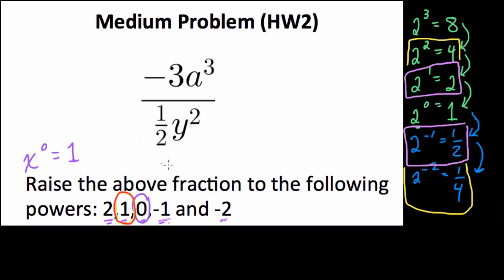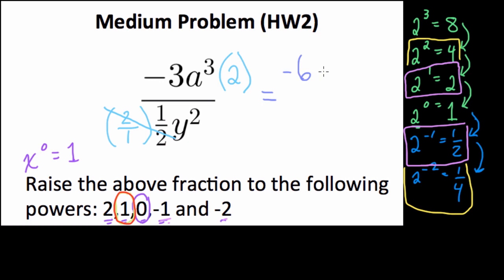You probably don't want to leave a fraction in your denominator. A nice way to get rid of that fraction is to multiply by the reciprocal — multiplying a number by its reciprocal cancels it out, since one-half times two is one, and one won't affect your answer. But if you're going to multiply your denominator by two, you should also multiply your numerator by two. Distributing our two up here, we get negative six a to the third over y squared. So, if we raise it to the zero power it equals one; if we raise it to the first power, it equals negative six times a to the third over y squared.